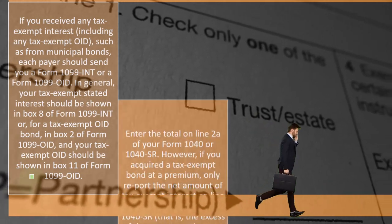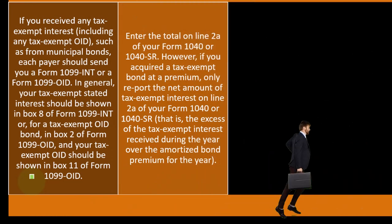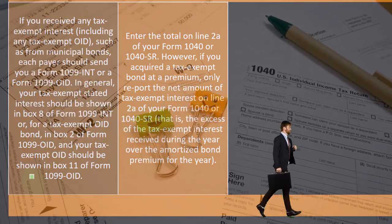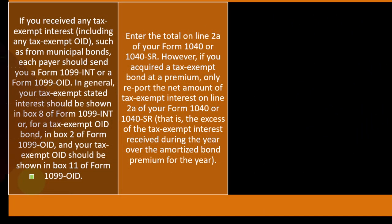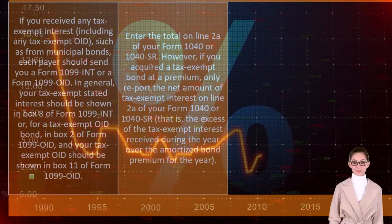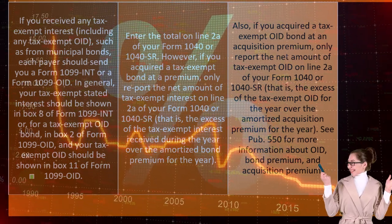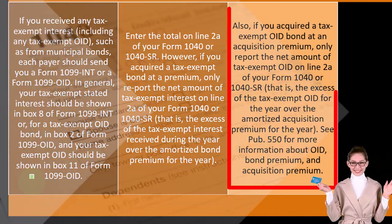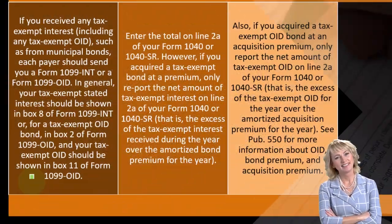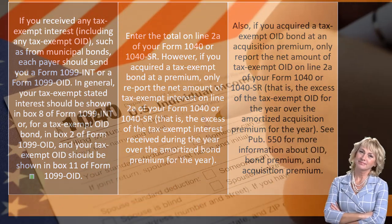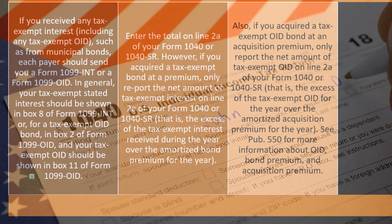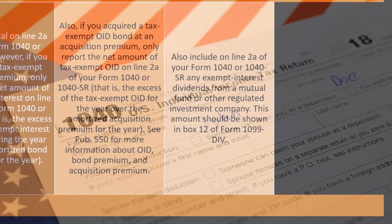Tax-exempt OID should be shown in box two of Form 1099-OID, and tax-exempt OID should also appear in box 11 of Form 1099-OID. Enter the total on line 2a of Form 1040 or 1040-SR, which is where tax-exempt interest is reported. However, if you acquired a tax-exempt bond at a premium, only report the net amount of tax-exempt interest on line 2a — that is, the excess of the tax-exempt interest received during the year over the amortized bond premium for the year. Similarly, for tax-exempt OID bonds acquired at an acquisition premium, only report the net amount. See Publication 550 for more detail.